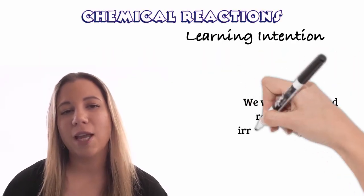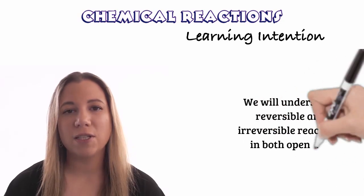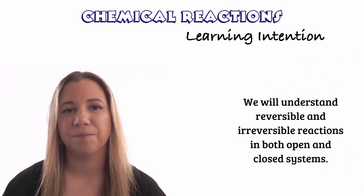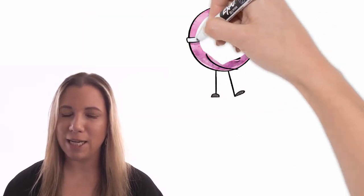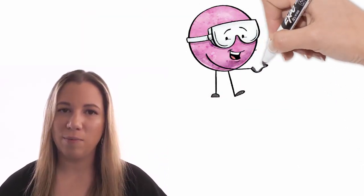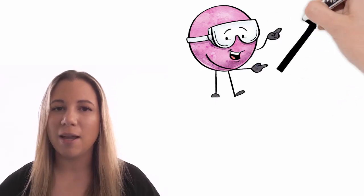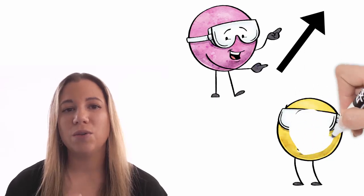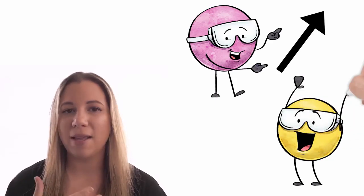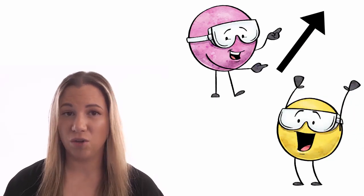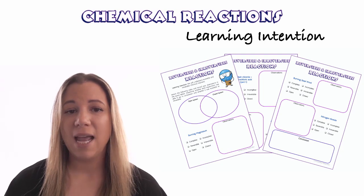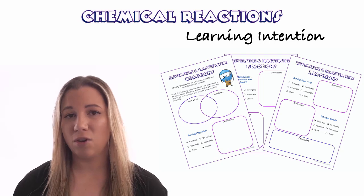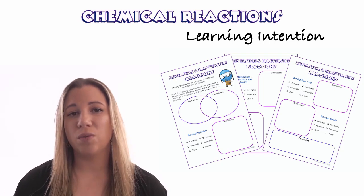By the end of this video, hopefully you'll get a really good understanding of reversible and irreversible reactions in open and closed systems. I'm going to run this video a little bit differently — in the top right hand corner of your screen I'm going to put a link to a free resource that will help you make observations about the chemical reactions I'm going to show you in the lab.